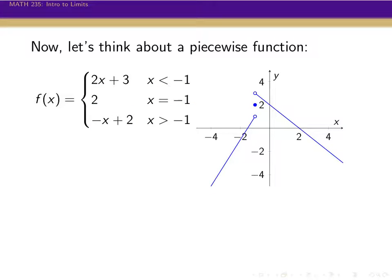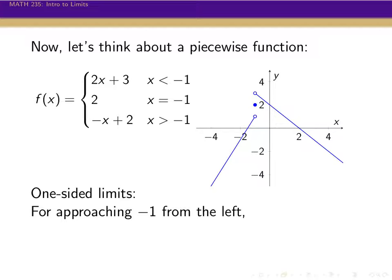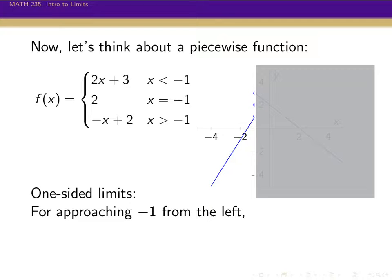Here is a graph of this piecewise function. All the action here is happening at x equals minus 1. Because it's a piecewise function, there are different functions on the left of minus 1 than on the right, which is different from what happens exactly at minus 1. So it makes sense to break this down and look at each side separately. This gives us the idea of what's called a one-sided limit. On a one-sided limit, we only imagine what's happening on one side. If we're approaching minus 1 from the left, we ignore everything happening to the right of minus 1.